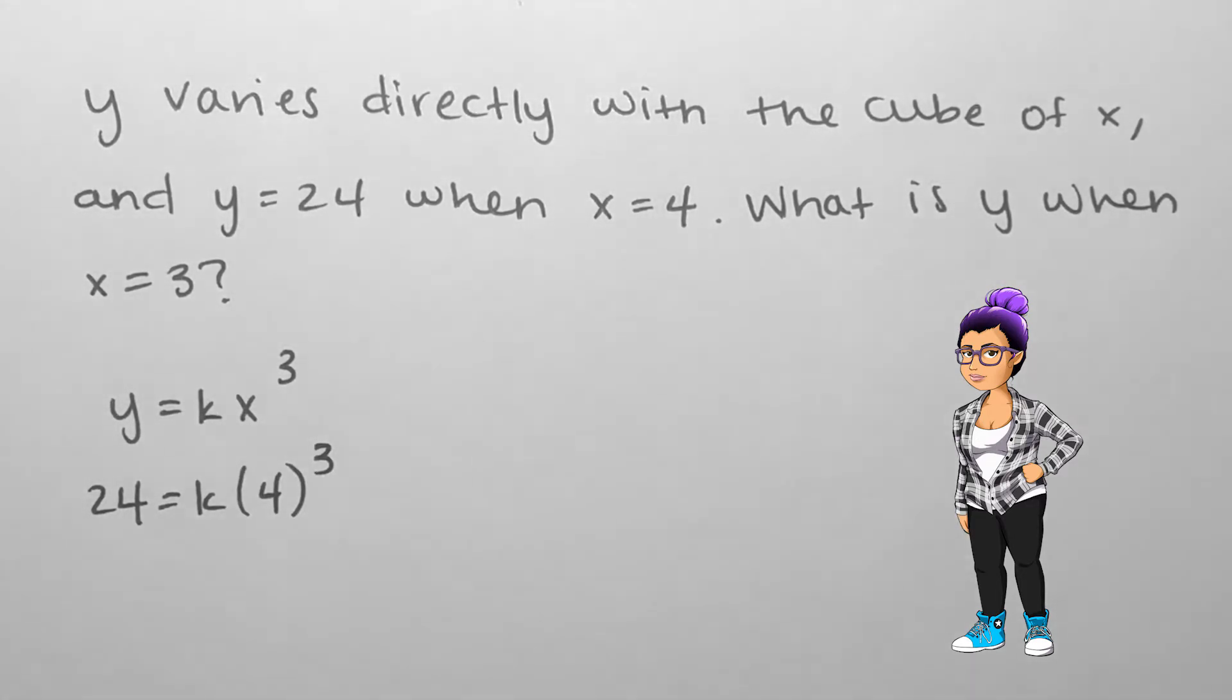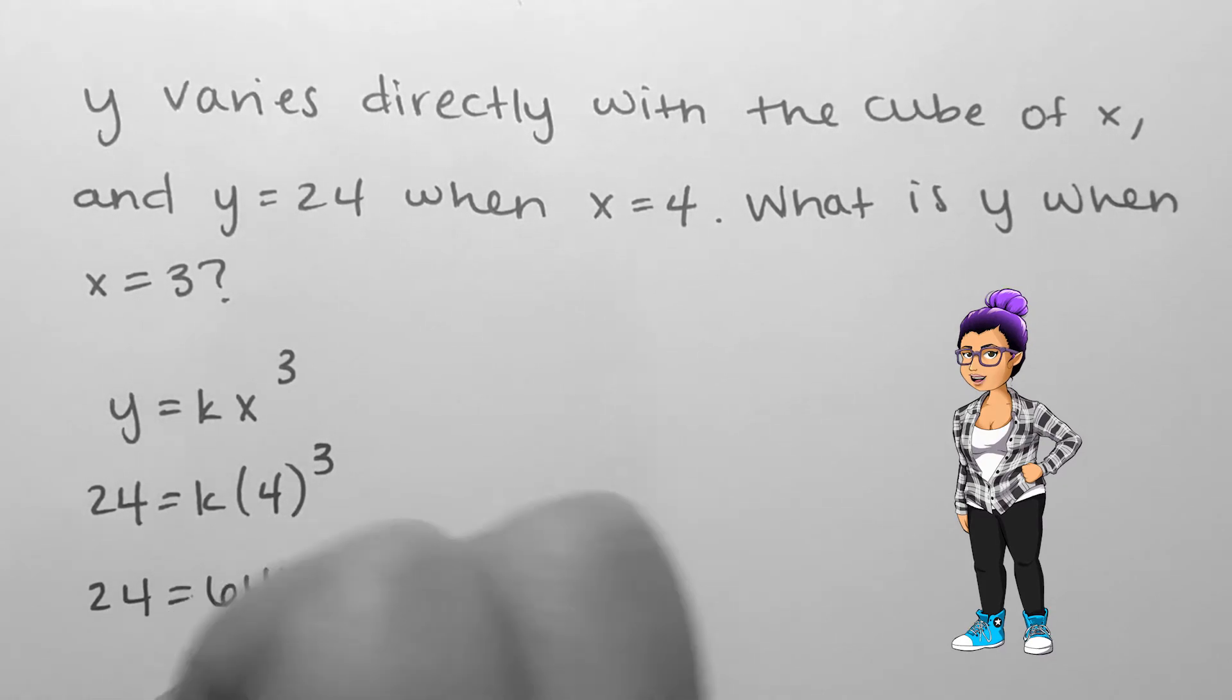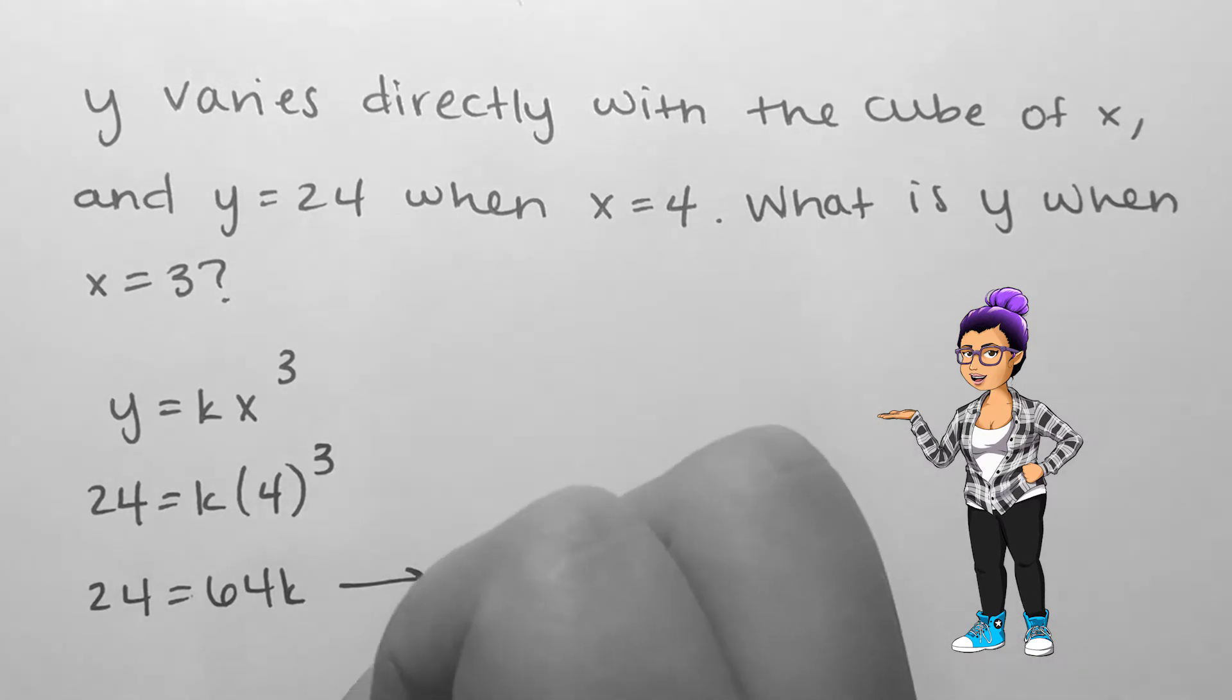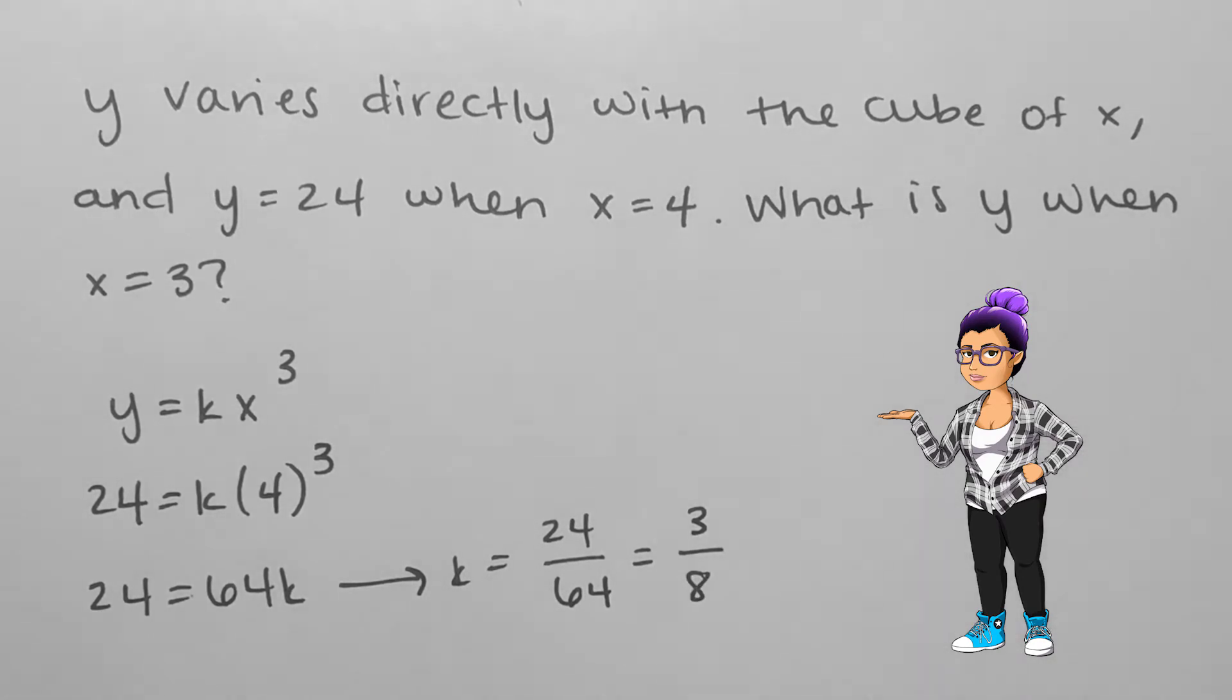Now we can replace y with 24 and x with 4. This leaves us with solving for k, the constant. Since x and y are variable, they may not be the same for the remainder of the problem, but k will stay the same once we solve for it.